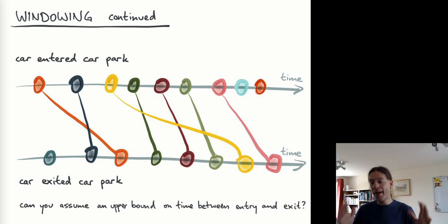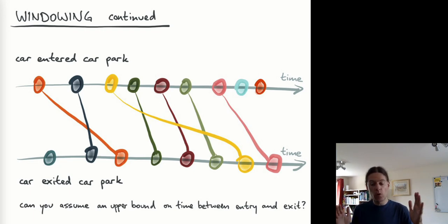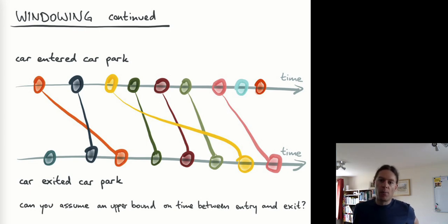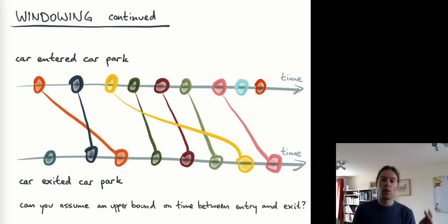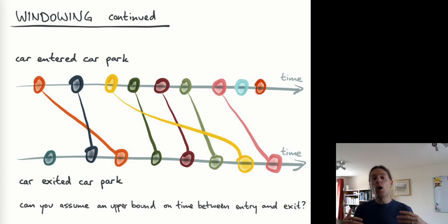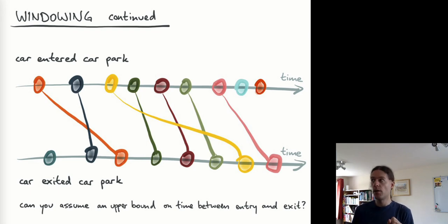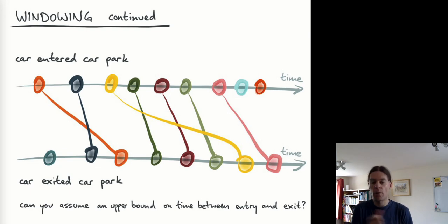Here I've represented each car with a different color and the joins between events with a line. Generally, a car will exit the car park after it has entered, so the period of time it stays is usually non-negative — though clock skew could cause a negative time. The question for windowing purposes: is there some upper bound you can assume? What is the maximum period from entering to exiting? Maybe it's 24 hours — if a car spends more than that it gets a fine. If you can assume an upper bound, you've got a windowed join; an unwindowed join assumes no upper bound.